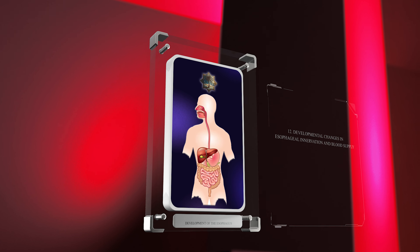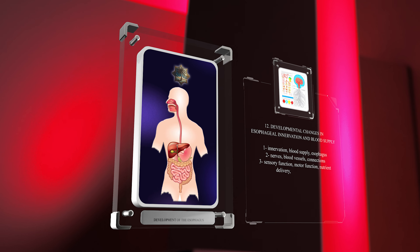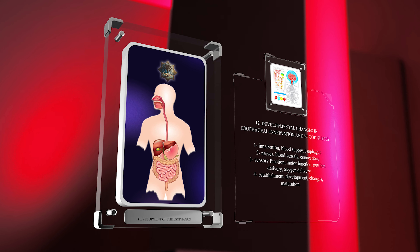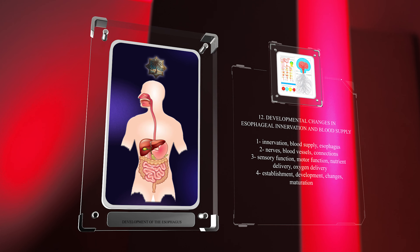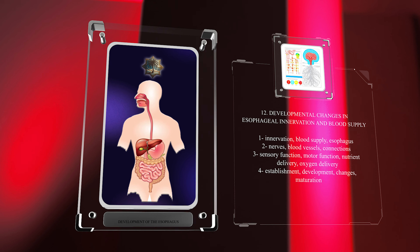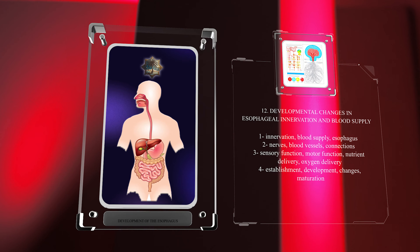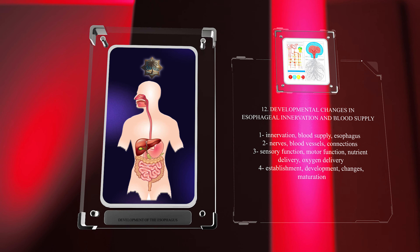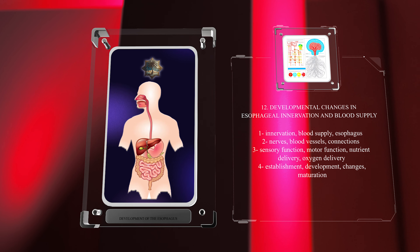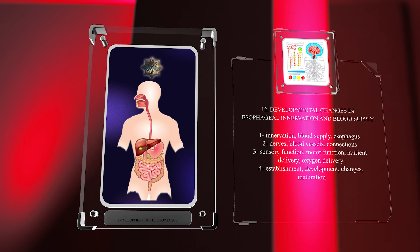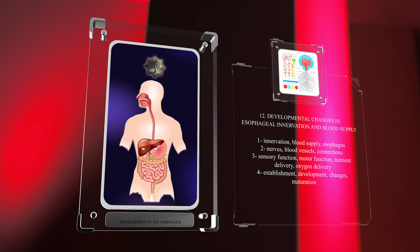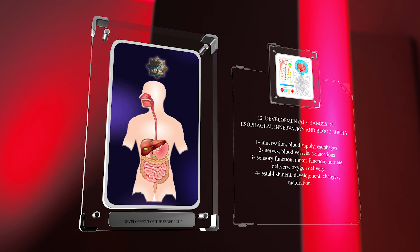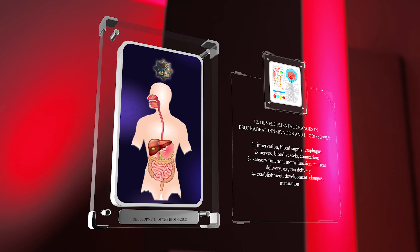During development, significant changes occur in the innervation and blood supply of the esophagus. Nerves and blood vessels establish connections with the developing esophagus, ensuring proper sensory and motor functions, as well as nutrient and oxygen delivery. Understanding the establishment of innervation and vascularization, as well as their changes during development, provides valuable insights into the maturation of the esophagus.